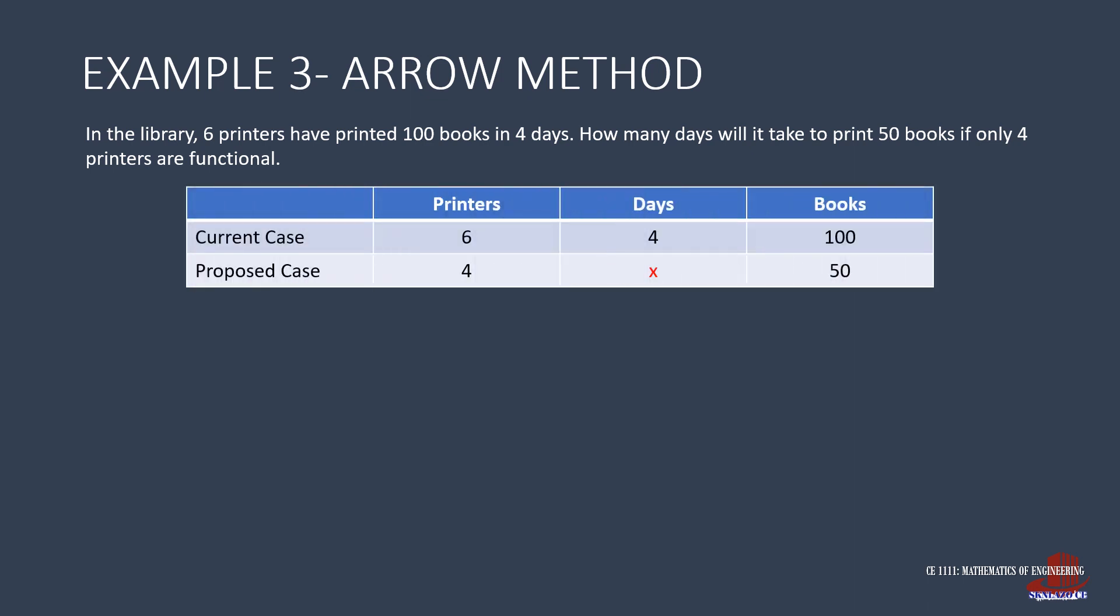How many days will it take to print 50 books if only 4 of the printers are functional? Place all quantities in a table: number of printers, number of days, and number of books. Now we are ready to analyze trends. First, if more printers are working, the job will take lesser number of days, an inverse proportion.